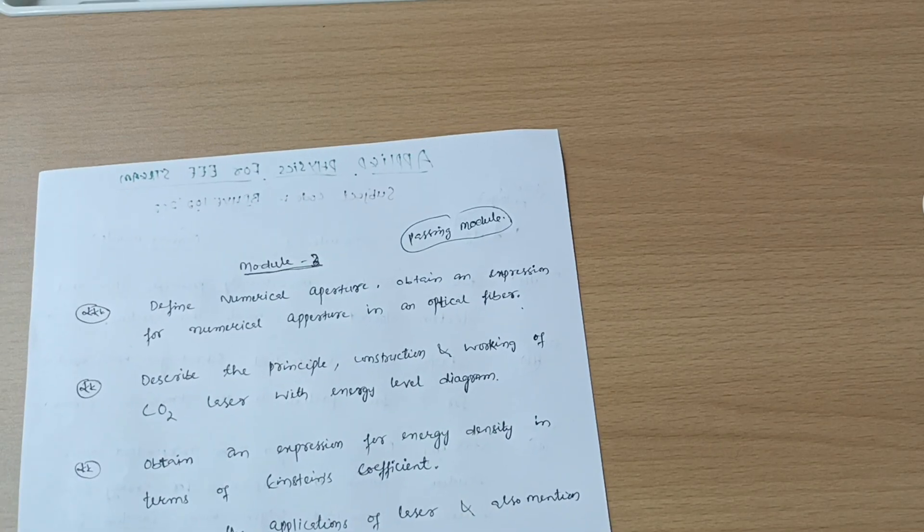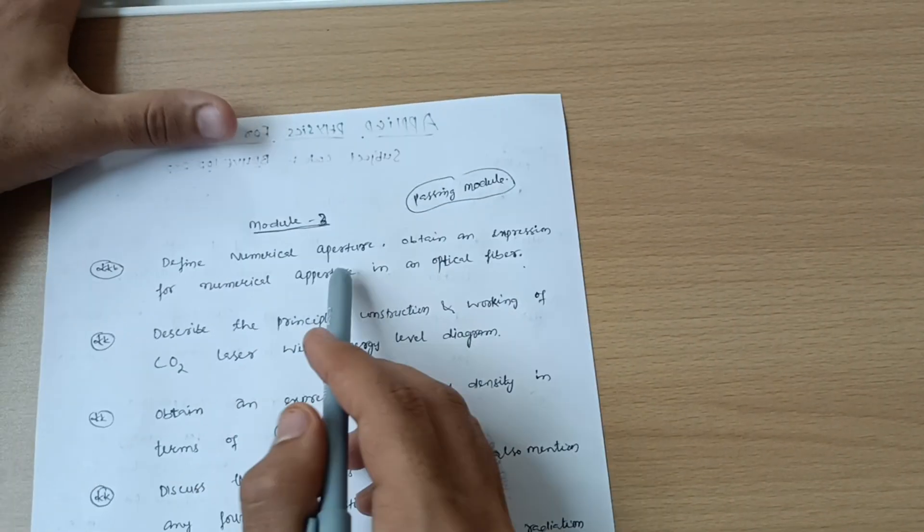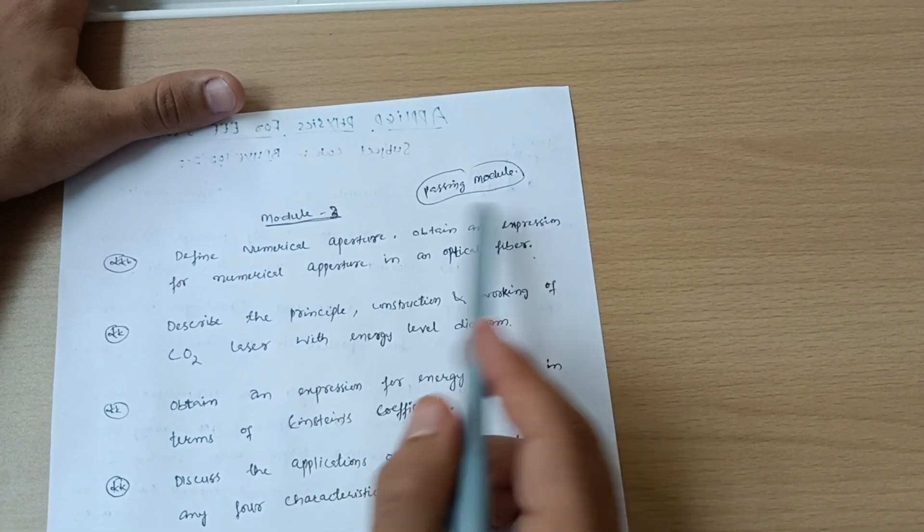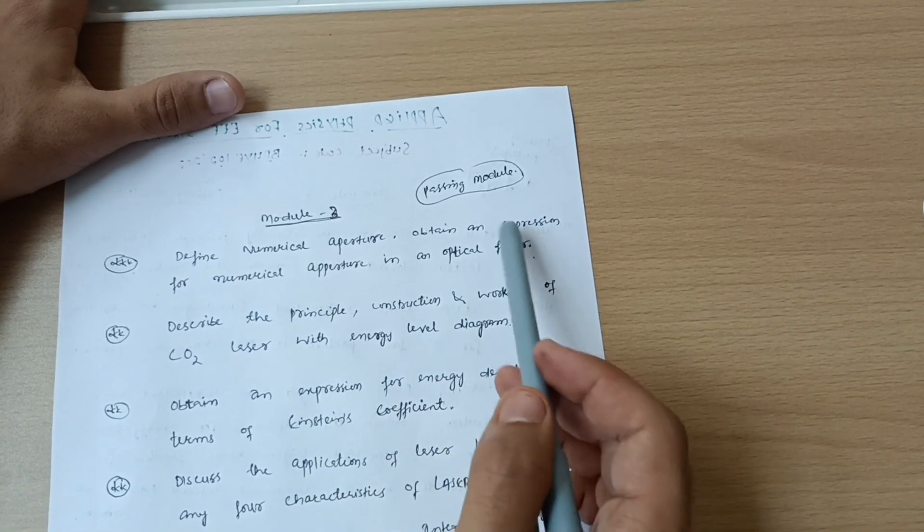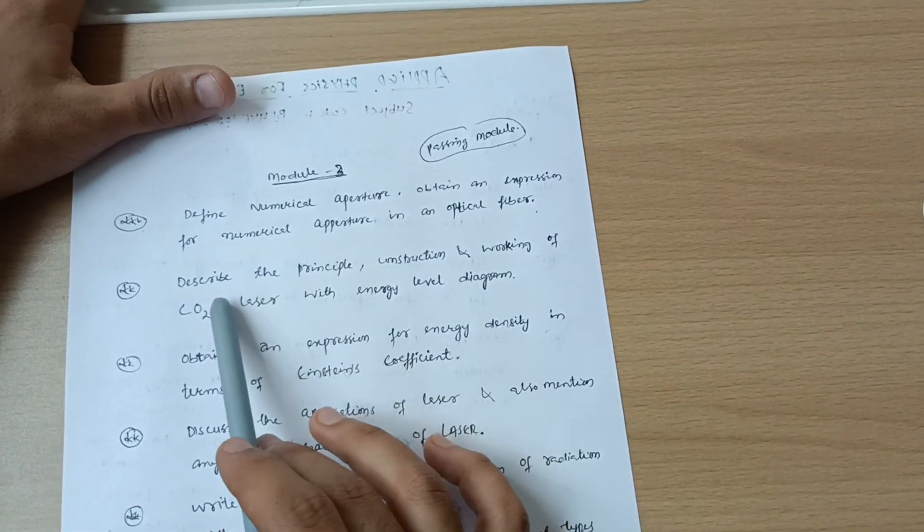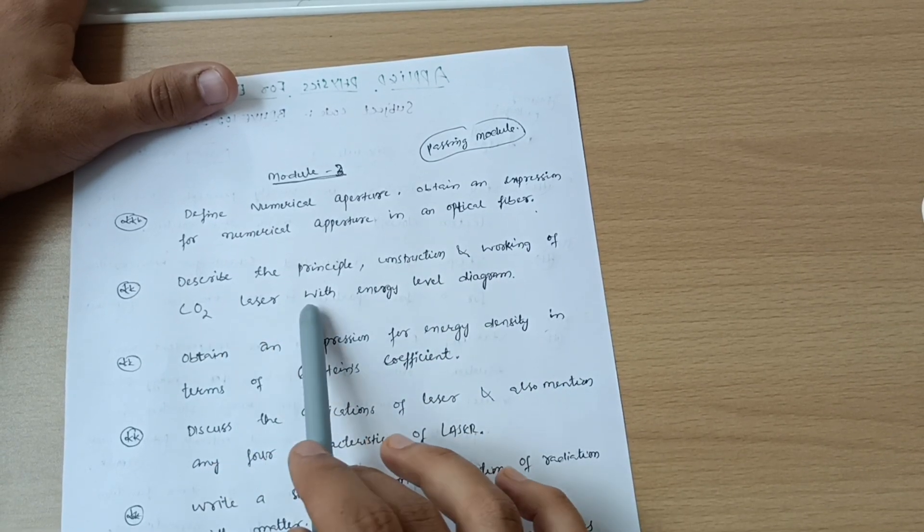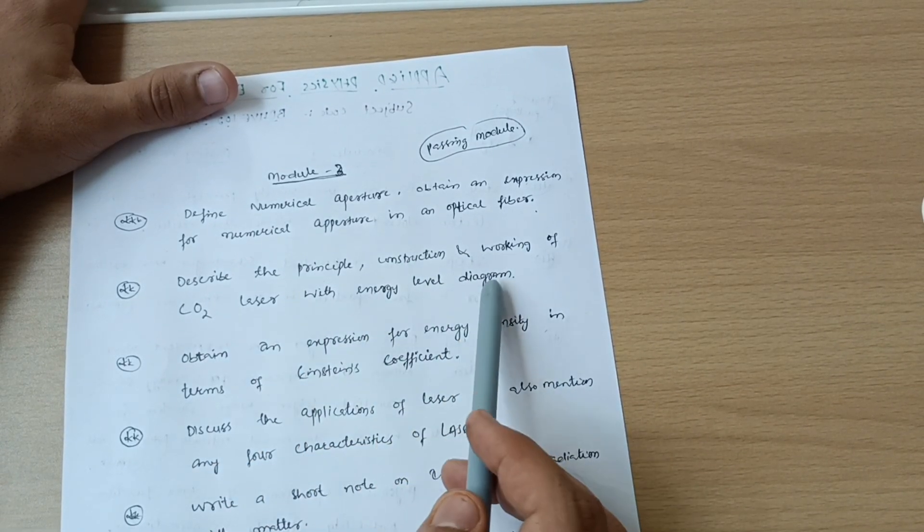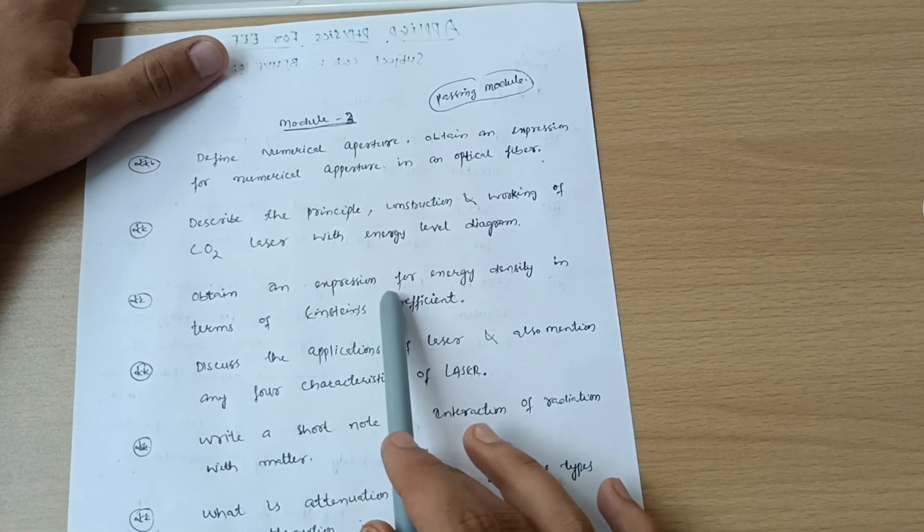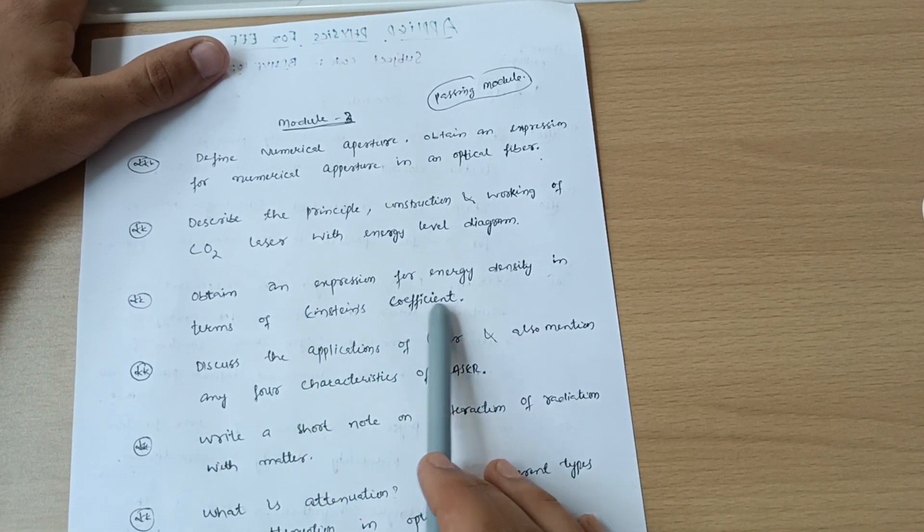Now the again passing module which is module third. Define numerical aperture, obtain an expression for numerical aperture in an optical fiber. This is the super important question. Next is describe the principle, construction and working of CO2 carbon dioxide laser with energy level diagram. Obtain an expression for energy density in terms of Einstein's coefficients. This may be a six marks question.